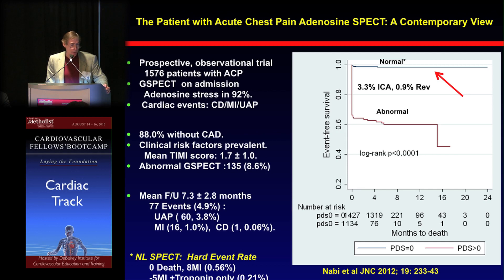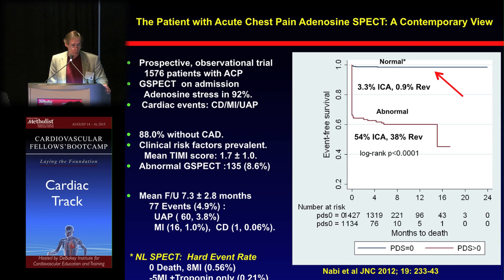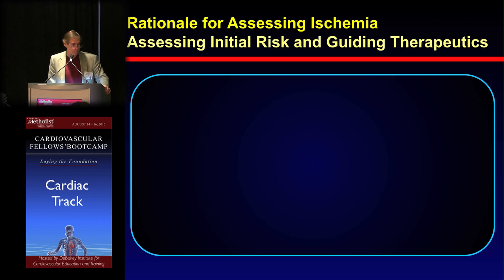In the normal group, only 3% underwent invasive coronary angiography, and less than 1% got revascularized — again showing that a normal study is a very good gatekeeper to the cath lab. However, in patients who had abnormal studies, 54% went for invasive coronary angiography, and 38% got revascularized. So nuclear imaging is a way of streamlining who needs to go to the cath lab and who doesn't.